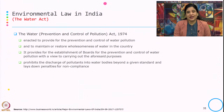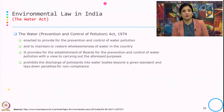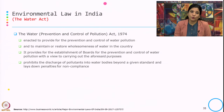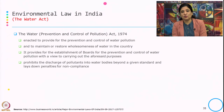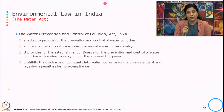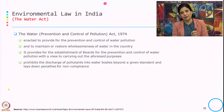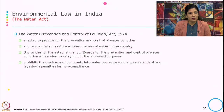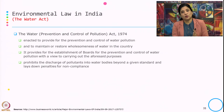Then we have the Water Act of 1974, enacted to provide the prevention and control of water pollution and to maintain and restore the wholesomeness of water in the country. It provides for the establishment of boards for prevention and control of water pollution and prohibits the discharge of pollutants into water bodies beyond a given standard, laying down penalties for non-compliance. Under the Water Act, the Central Pollution Control Board specifies dischargeable limits for water pollutants such as BOD, COD, and TSS.